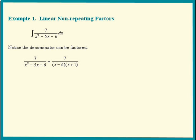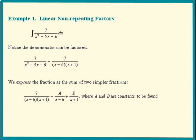We express the fraction as a sum of two simpler fractions and that's why it's called the method of partial fractions. On top of each linear factor, we put a constant. So we have a over x minus 6 plus b over x plus 1.